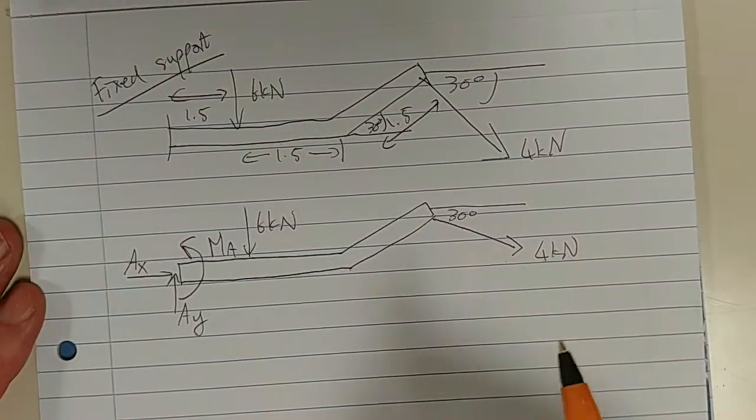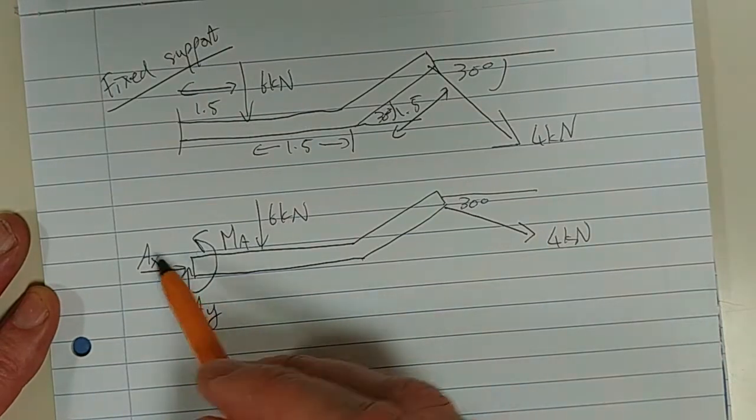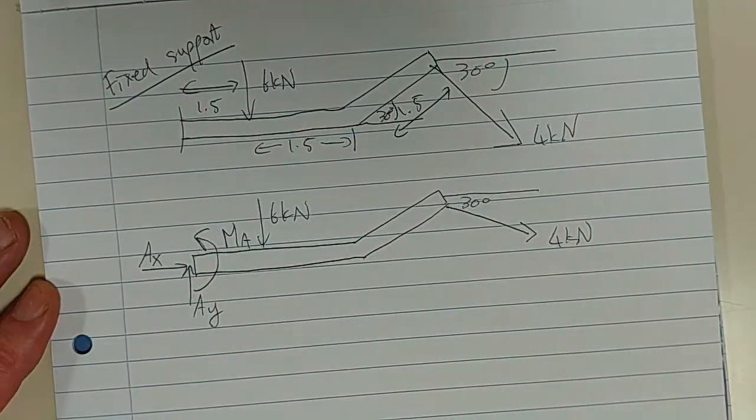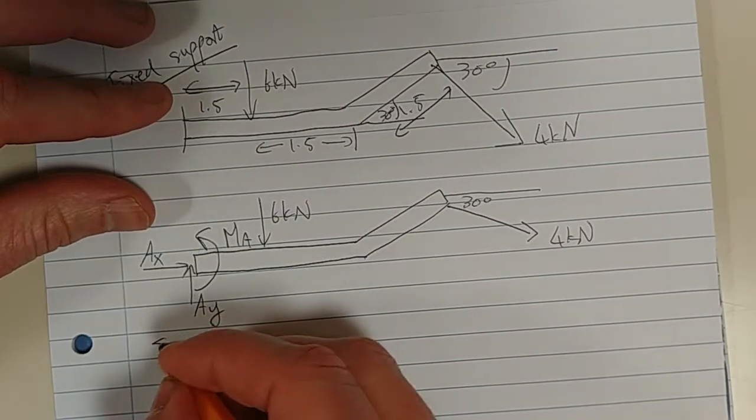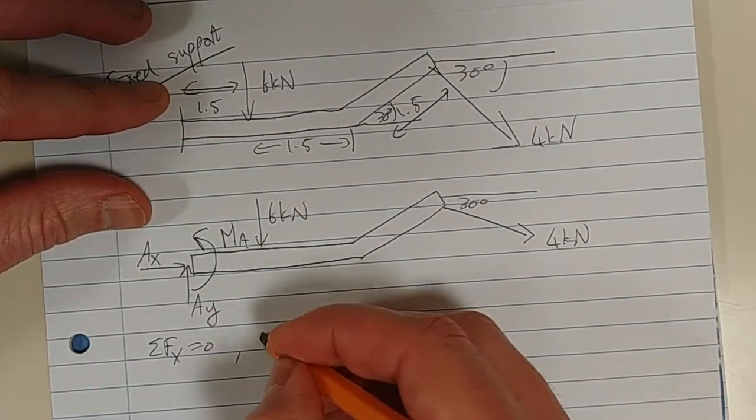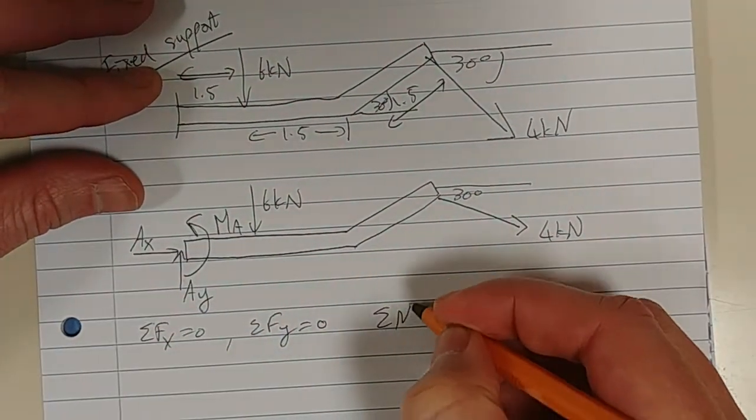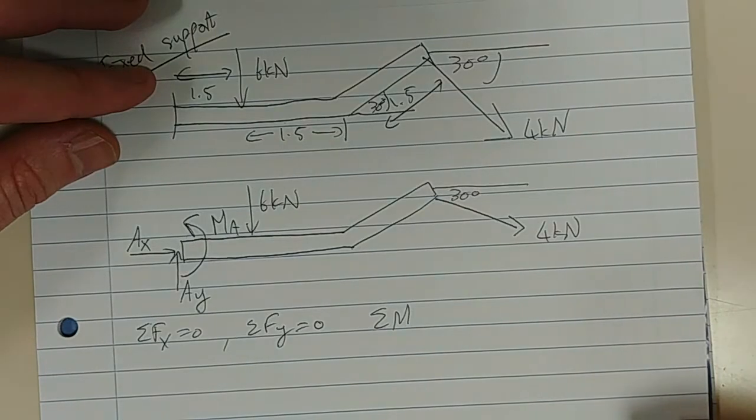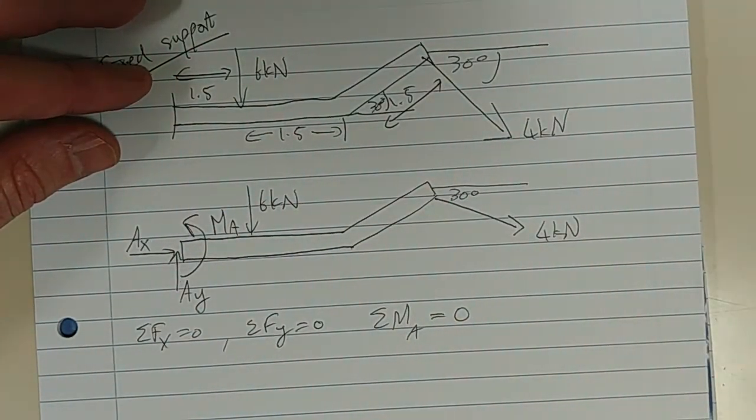So, now, we're trying to solve what's happening here at the support. We're trying to solve for Ax, Ay, and the moment MA. So, what do we need to do? Well, sum of the forces in the x equals zero. Sum of the forces in the y equals zero. And sum of the moments about somewhere, A equals zero.